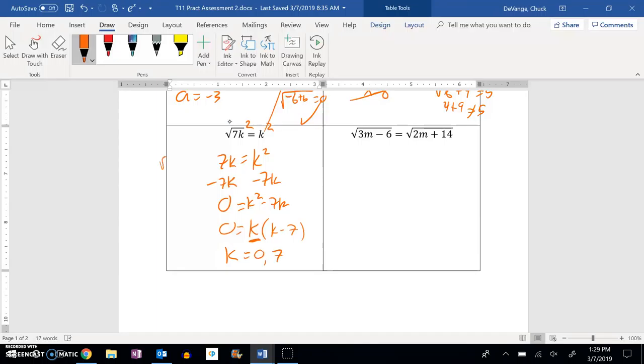And if I plug them both back in, square root of 7 times 0, that equals 0. And square root of 7 times 7, yeah, that equals 7. They both work. So there they both are.